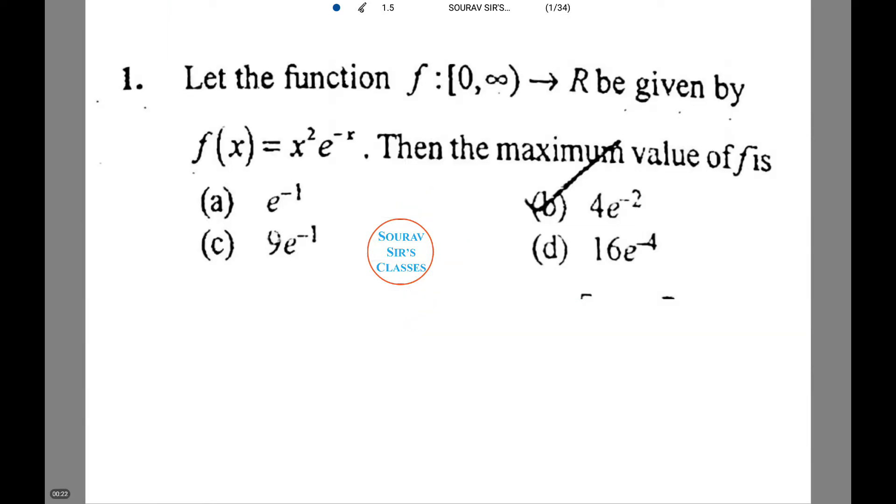We are given a function f(x) equals x square e to power minus x. We are also given f belongs to R. We need to find the maximum value of f. In the first one, I have already marked the answer. Let's see how we do this.